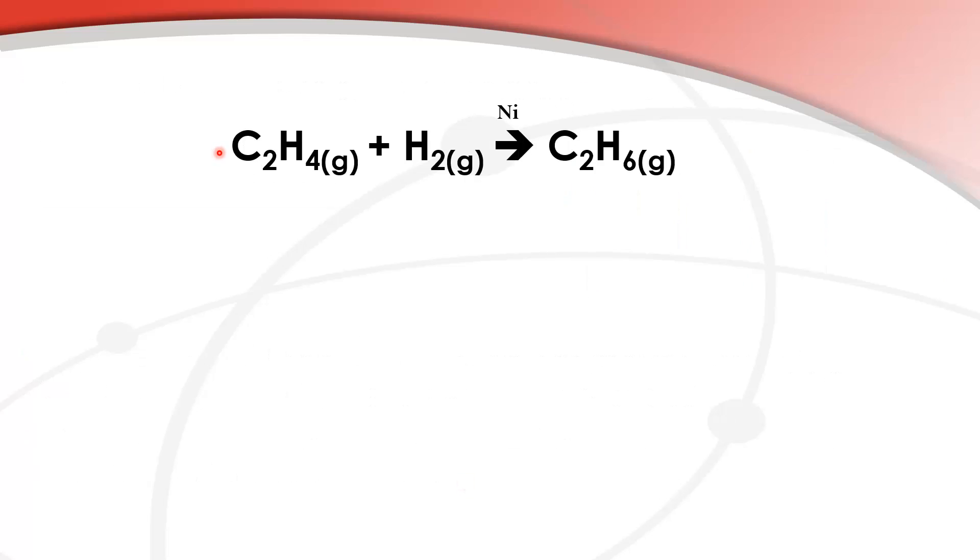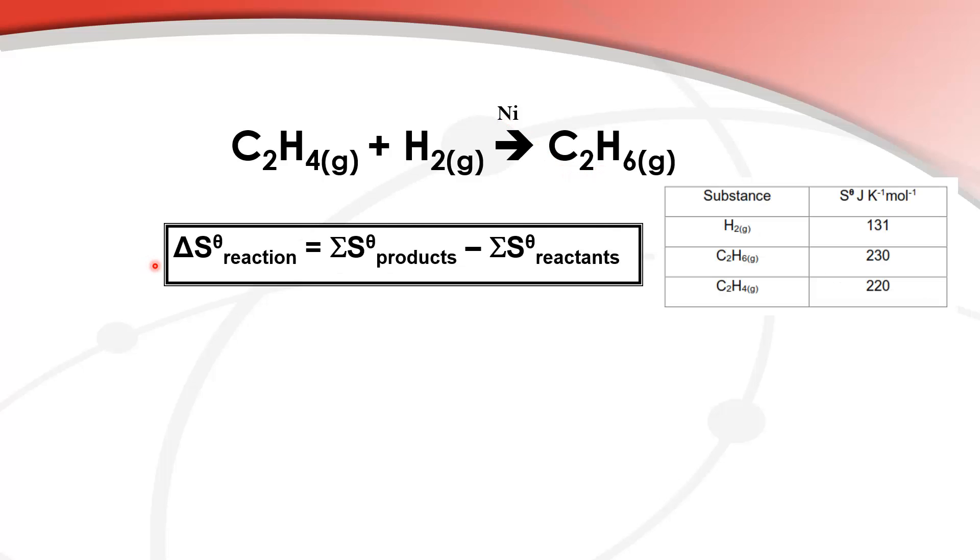Let's try an example. Here we have the hydrogenation of ethene. So ethene reacts with hydrogen in the presence of a nickel catalyst to give ethane. We can use this equation here to calculate our change in entropy for a reaction. Here we have our absolute entropy values for hydrogen, ethane and ethene.